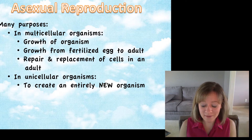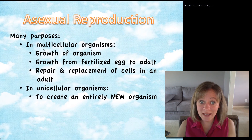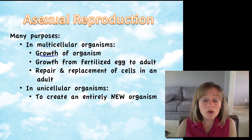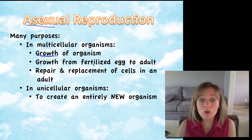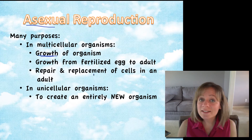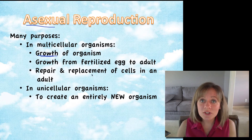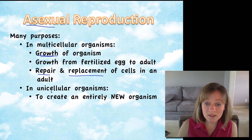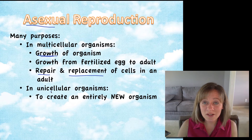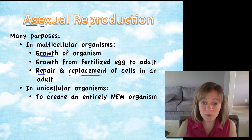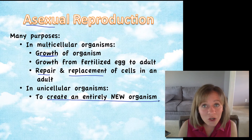Why do your cells need to make new cells? In multicellular organisms like you, you do it to grow. Also, when you were a little fertilized embryo, you had to use asexual reproduction to grow from a fertilized egg to an adult. Any time you have any type of injury, whether you see it or not, your cells use asexual reproduction to repair and replace cells. In unicellular organisms, like that yeast or bacteria and other prokaryotes, they use asexual reproduction to create an entirely new organism.